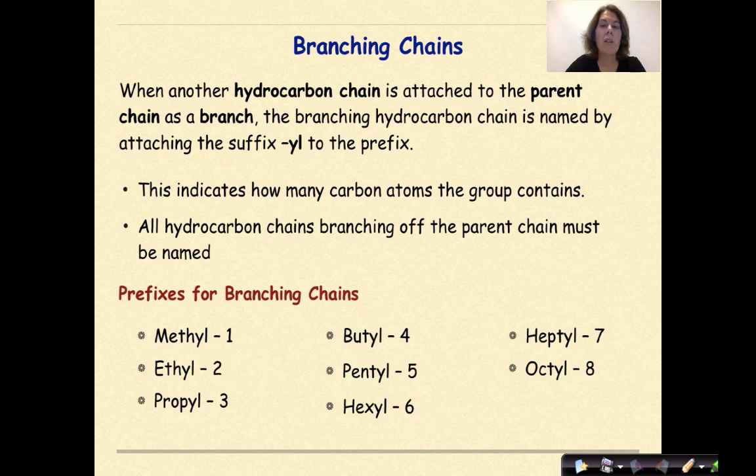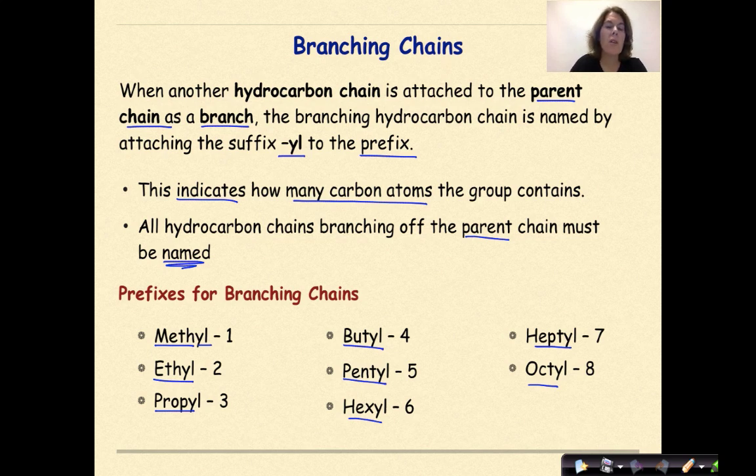When another hydrocarbon chain is attached to the parent chain as a branch, the branching hydrocarbon chain is named by attaching the suffix Y-L to the prefix. This indicates how many carbon atoms the group contains. All hydrocarbon chains branching off the parent chain must be named. That's very important. So if there's one carbon branching off the parent chain, we call it methyl. If there was two carbons involved in the branching chain, it'd be ethyl. If there was three carbons involved in the branch, it'd be propyl, which is really where I would stop in this course.